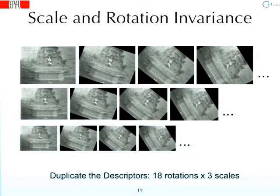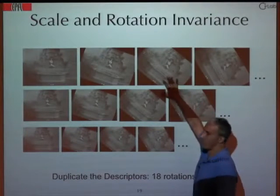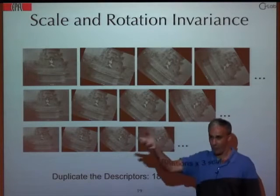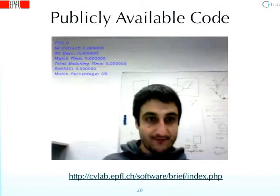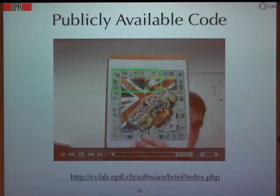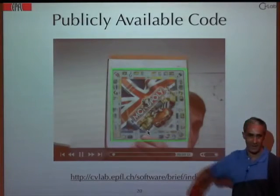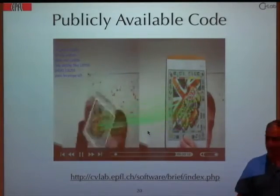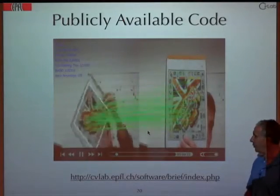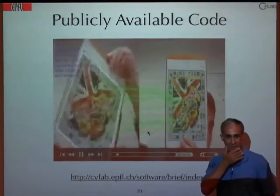One more word about scale and rotation invariance: BRIEF is neither scale nor rotation invariant. But it's very fast. If you do need scale and rotation invariance, what you can do is learn rotated versions for each keypoint — you pay a price, but it's acceptable. This is the kind of thing it'll do: a very simple demo where you just show the object to the computer, say 'here is my area of interest,' and immediately, because there is no learning, you can start tracking it. Don't believe benchmarks — try the code. I've heard some of you already have.